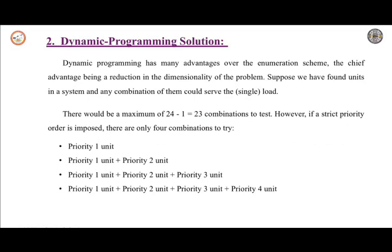The dynamic programming solution method is compared to the priority list method. This is one of the best methods which gives an accurate solution to the unit commitment problem. It has advantages over numerous available schemes. The main advantage of this method is the dimensionality — dimensionality of the problem. Suppose if you have four units in a system and any combination of them could serve the load.